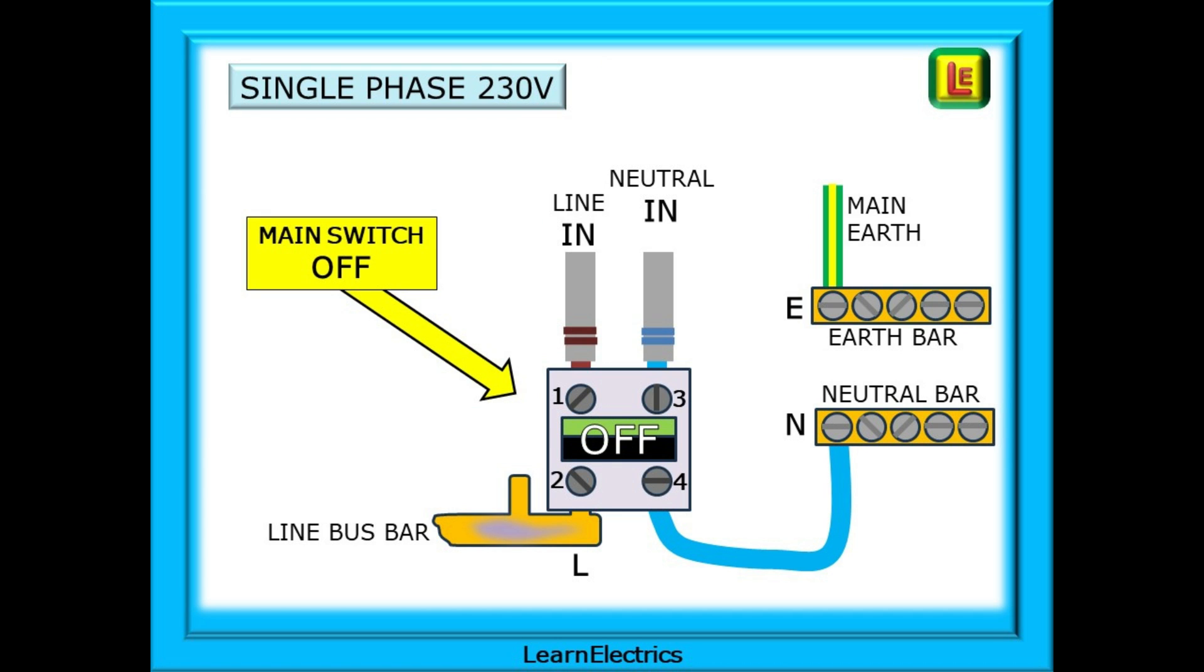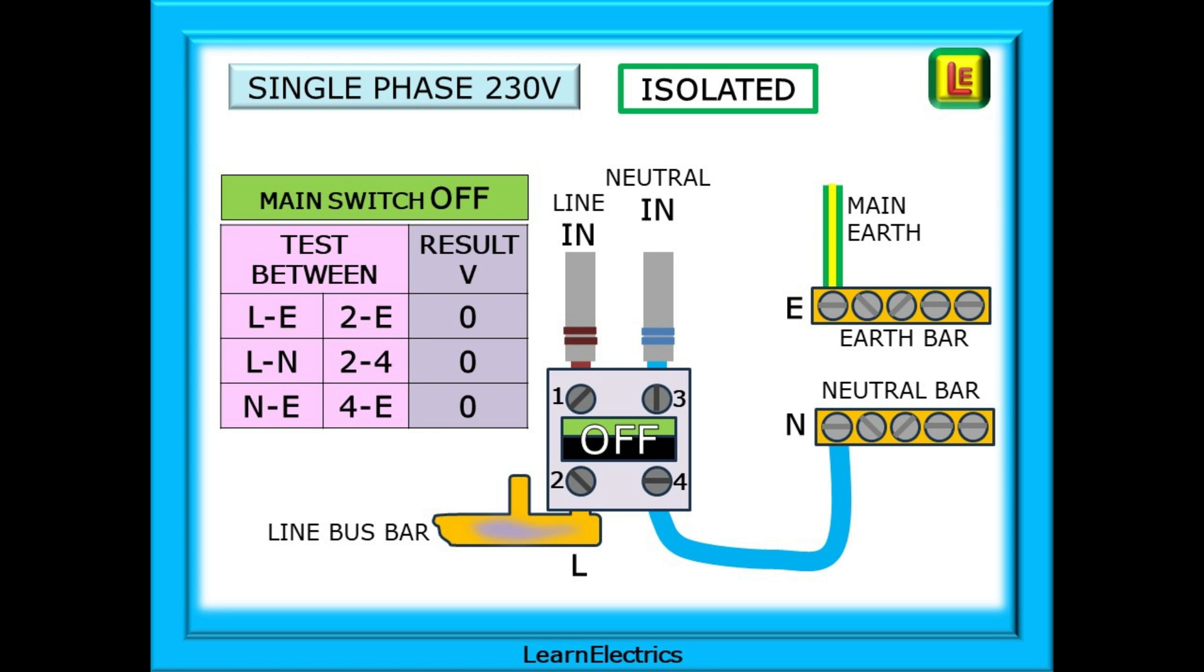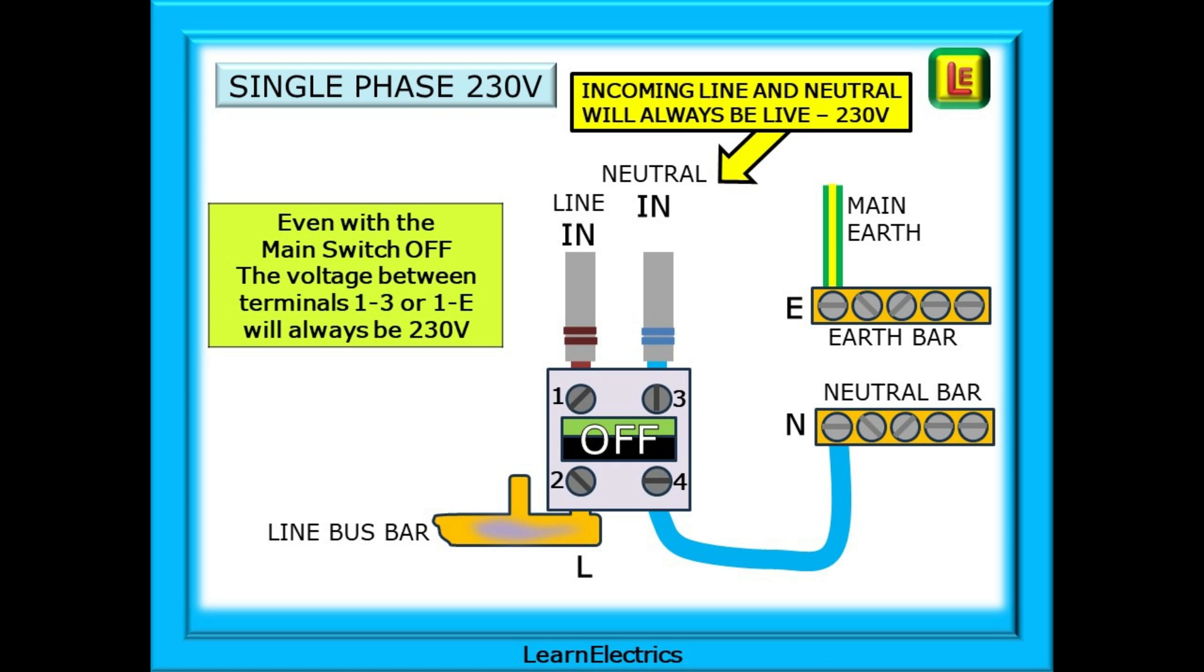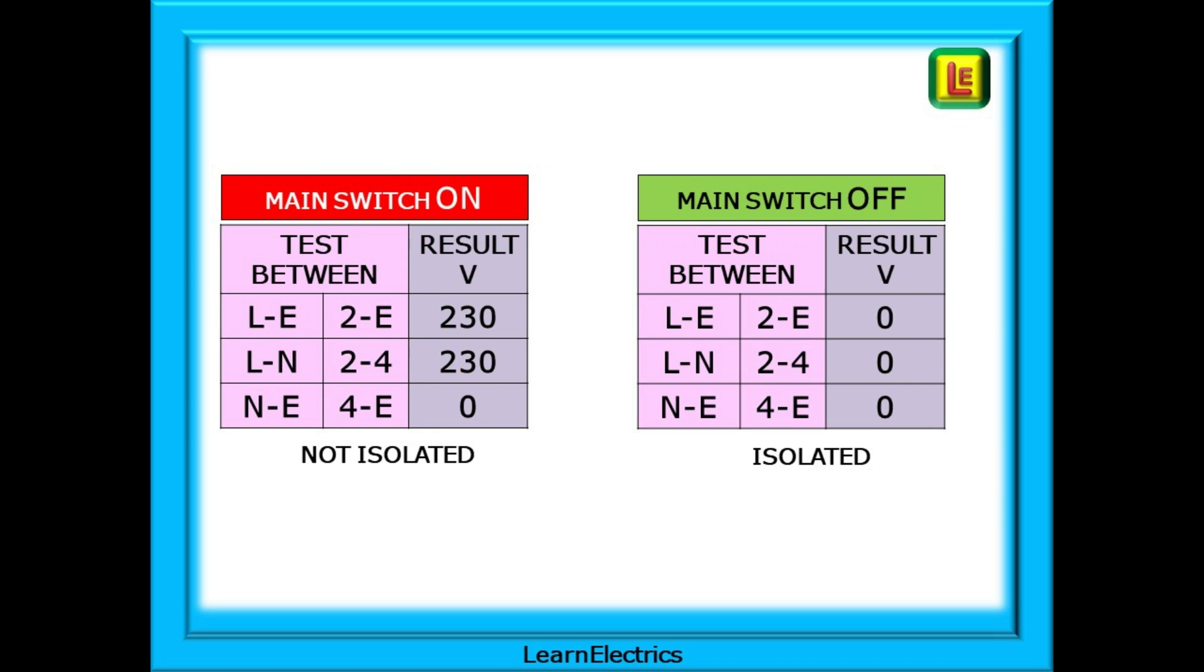Now we can turn the main switch off and isolate the installation. The intention of safe isolation is to remove the installation from all sources of electrical energy. With the main switch off, we want to prove isolation, so carry out the voltage checks again. What should we expect? Line to earth is zero. Line to neutral is zero. And neutral to earth is also zero. All three possible combinations are zero volts. The installation is isolated. The installation after the main switch is isolated, but the top half of the switch is still live. The incoming main tails are still live unless the cutout fuse has been removed. Although the installation is dead, there is still live electricity at certain points inside the consumer unit. And these two tables should act as a refresher of the voltages to be expected when comparing an installation that is not isolated to one that is isolated.